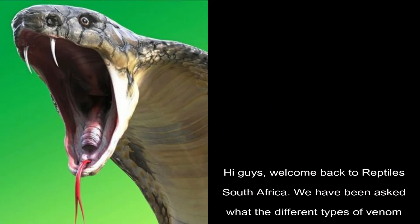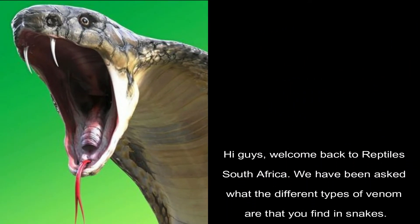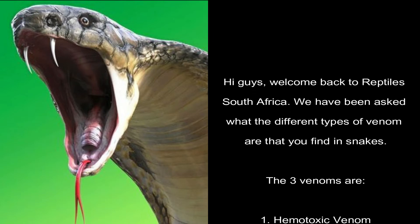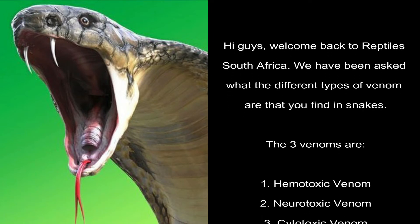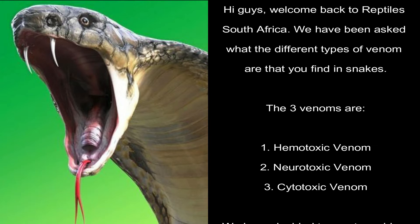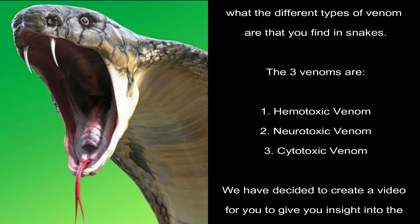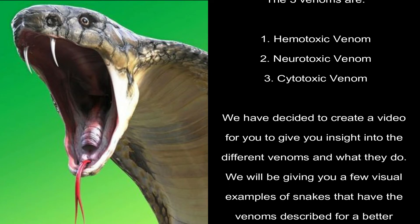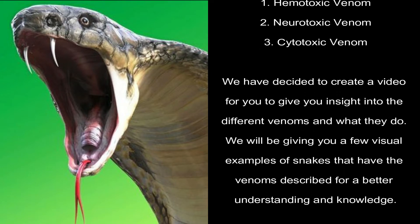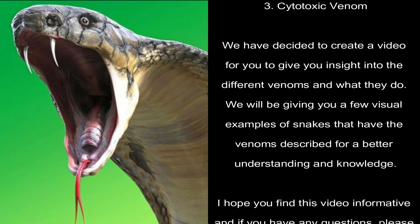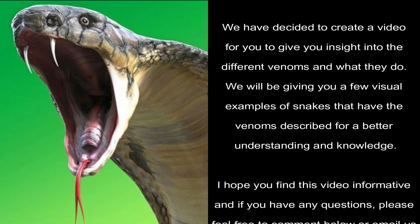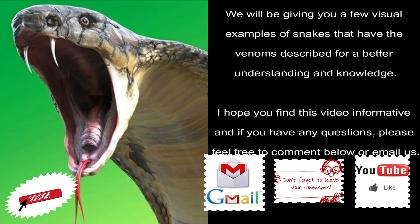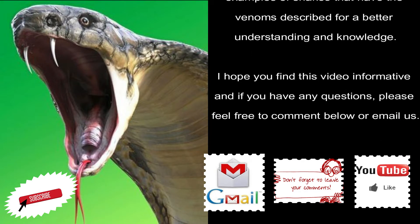Hi guys, welcome back to Reptiles South Africa. We have been asked what the different types of venom are found in snakes. The three venoms are hemotoxic venom, neurotoxic venom, and cytotoxic venom. We have decided to create a video to give you insight into the different venoms and what they do. We'll be giving you a few visual examples of snakes that have the venoms described for a better understanding and knowledge. I hope you find this video informative and if you have any questions, please feel free to comment below or email us.